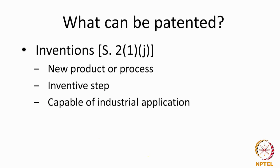The patent office is designed so that groups of examiners with skills in a particular technology analyze and examine patent applications from different fields. The international patent classification — a code used for classifying patents — is also a technology-based classification. For example, a patent application in biotechnology will be examined by one group of examiners, whereas a pharmaceutical drug application would be examined by a different set. Patent law is technology-specific, and attorneys who draft patents also have domain knowledge in their particular field.